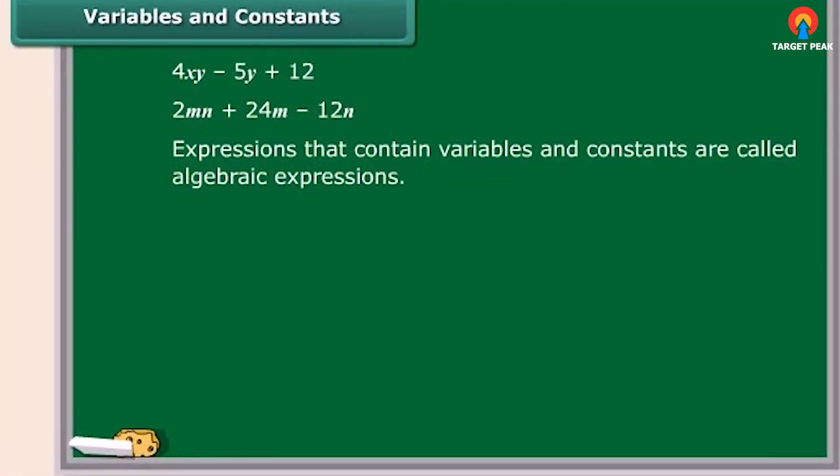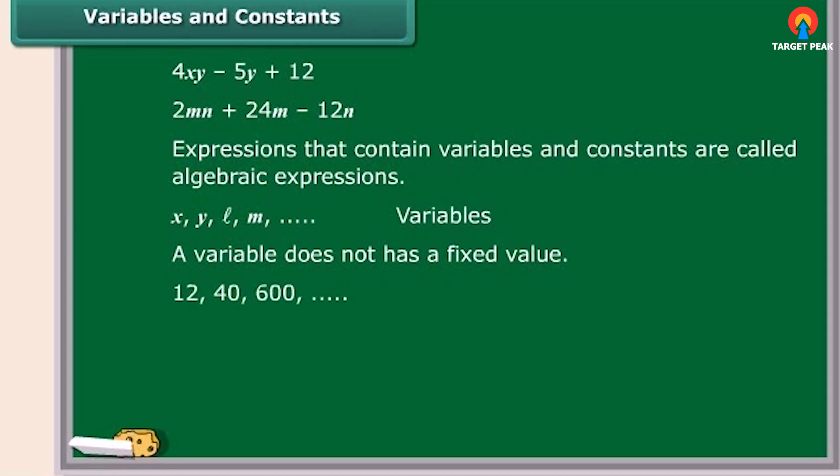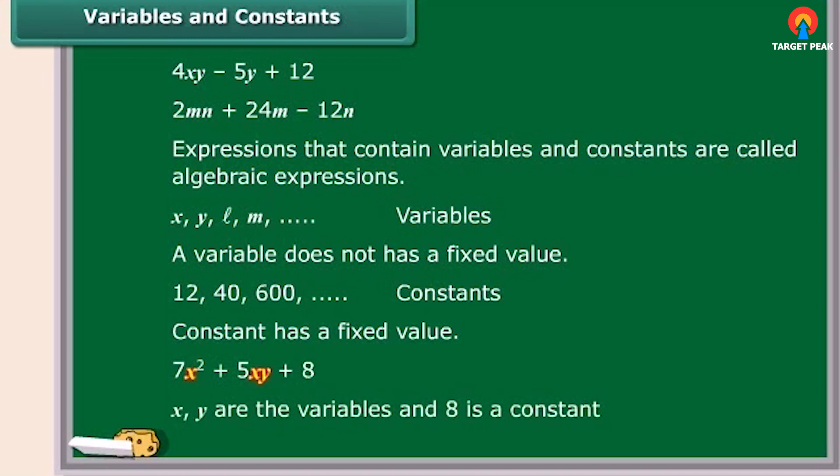Expressions that contain variables and constants are called Algebraic Expressions. The letters such as X, Y, L, M, and so on are used to denote variables. A variable can take various values and its value is not fixed. On the other hand, a value that does not change is a constant. So in an equation, 7X squared plus 5XY plus 8, X and Y are the variables and 8 is a constant.